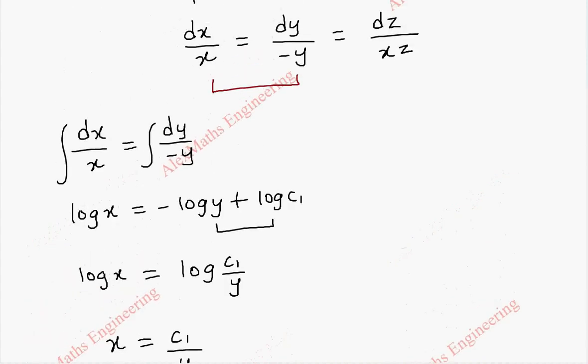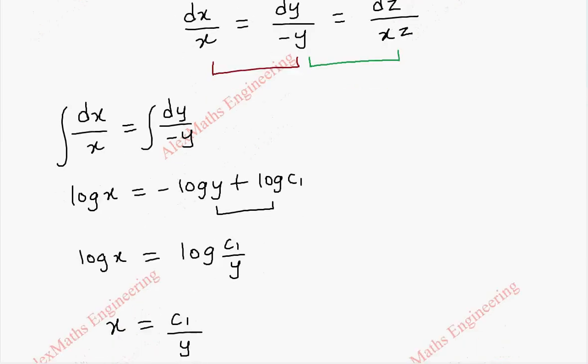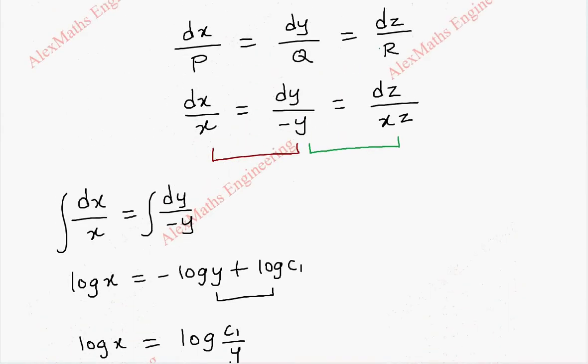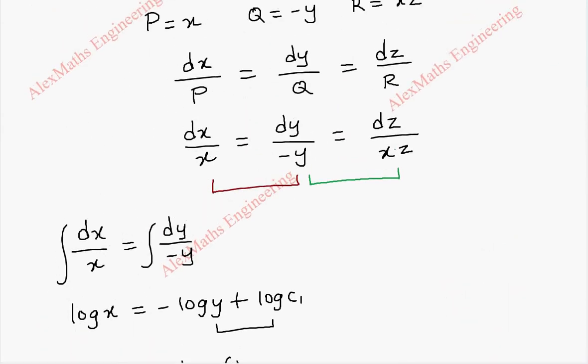In the same way, we have to take the other two terms. If I take second and third, here there is an extra term x. But, if I take this, then I can substitute x from this c1 by y and again I can continue. But, instead, I can also take first and last. So, it will be easier.